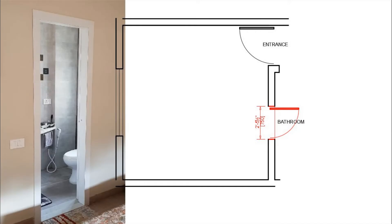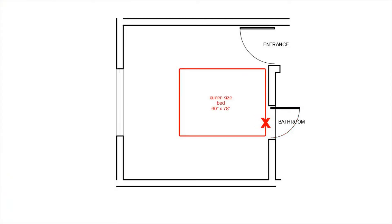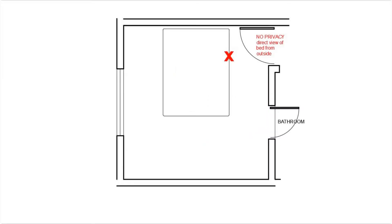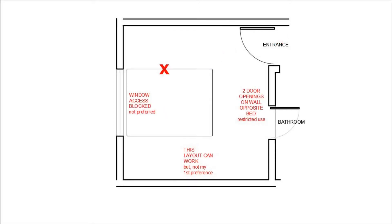Let us take a queen-size bed of 60 inches by 78 inches and check on which wall it will be most suitable to place. We will not be able to place it on the right wall as it will block the entry to the washroom. It doesn't make sense placing it right in front of the entry door since you'll lose privacy. Placing it on the left window wall will be blocking the window, of course.